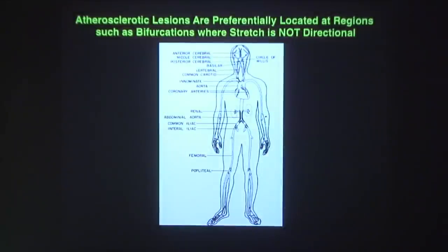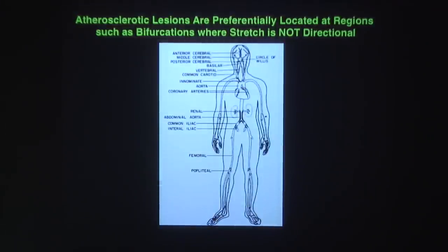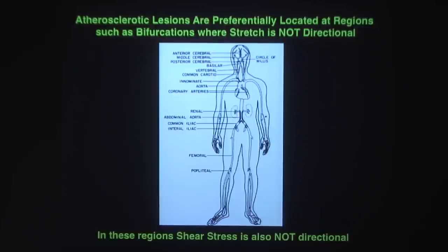The straight part of the aorta, where stress fibers are oriented perpendicular to the unidirectional circumferential stretch, is protected from atherogenesis. In contrast, the branch points, where stretch does not have a clear direction, are prone to atherogenesis. In these regions, shear stress is also not directional. Now I will turn to the effect of shear stress.